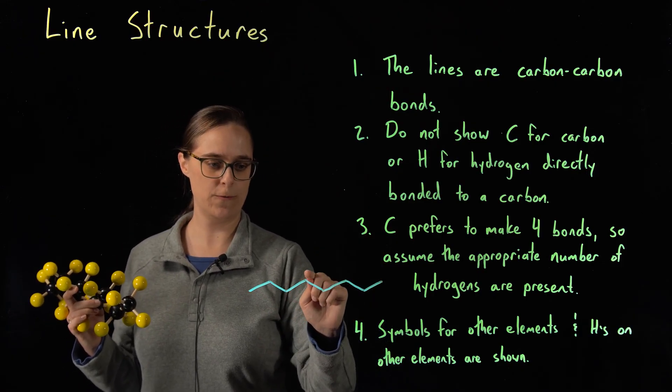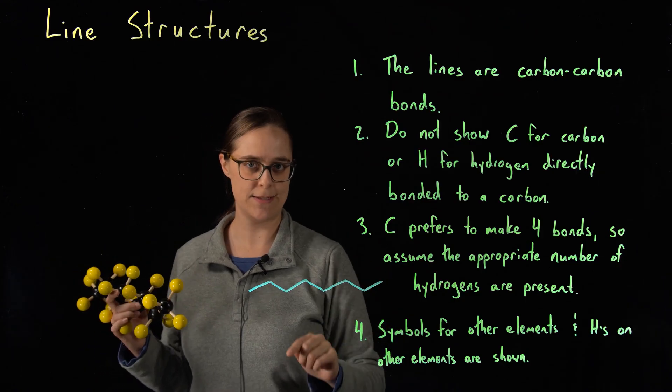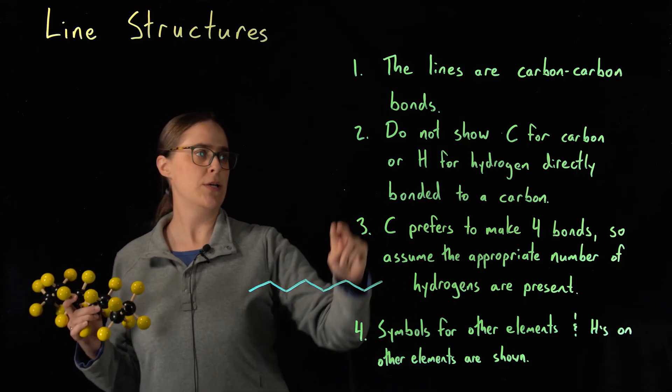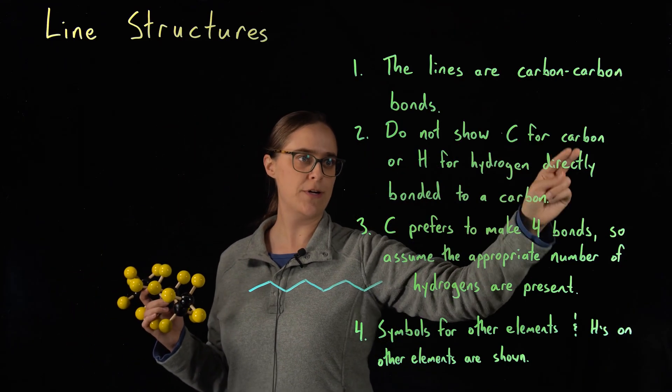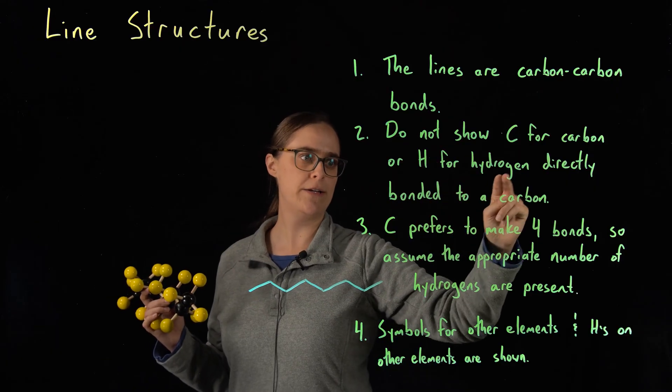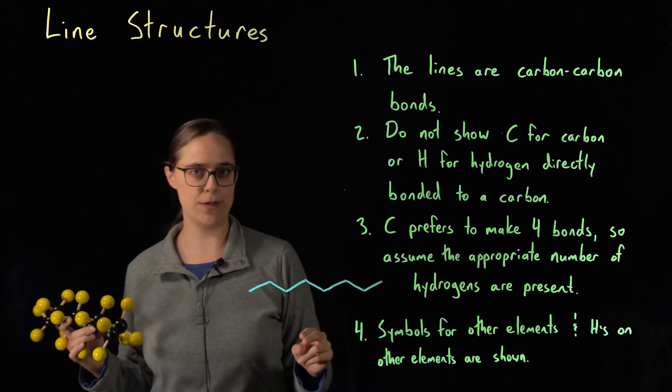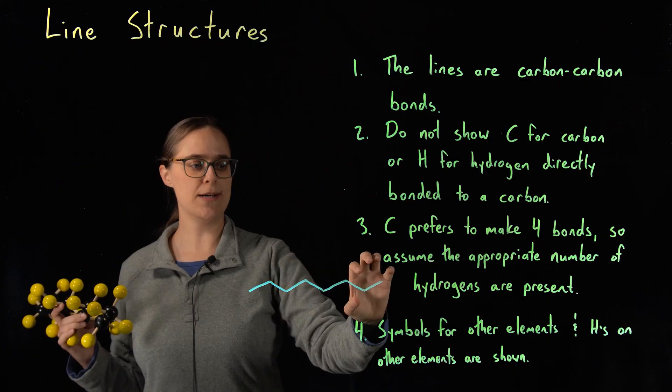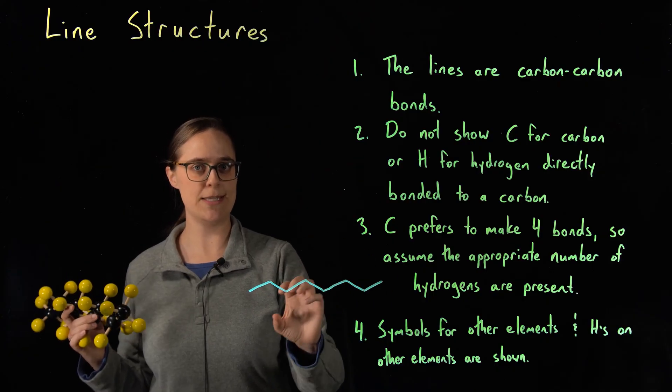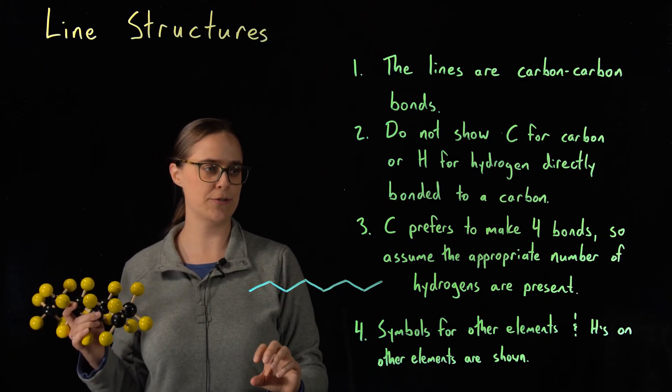So this is showing eight carbons in a chain. One, two, three, four, five, six, seven, eight. Rule two, do not show C for carbon or H for hydrogen directly bonded to a carbon. So you are not seeing the symbols C or H anywhere in this structure.